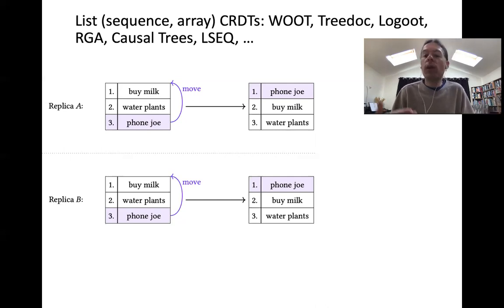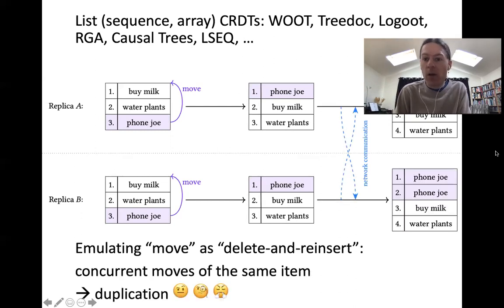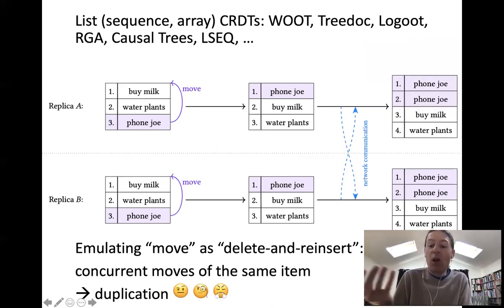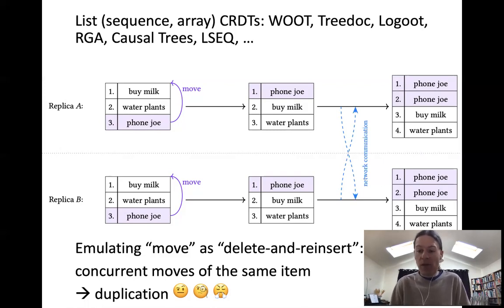Let's think about what happens if we do this deleting and reinserting. Here we've got two replicas concurrently moving the same list item. Both replicas delete phone Joe from position 3. Deleting an item twice is the same as deleting it once. Replica A reinserts phone Joe at the head of the list and replica B also reinserts phone Joe at the head of the list. So we have two insertions of phone Joe. The outcome is now we have the phone Joe item duplicated. The deletion and reinsertion happening twice concurrently inevitably leads to this duplication. This is not what we want. We don't expect an item to get duplicated just because it gets moved, especially not if two users concurrently perform the same operation moving the same item to the same position.